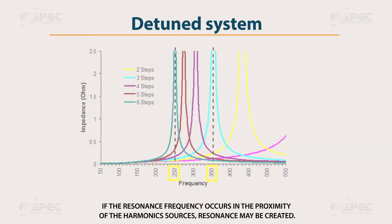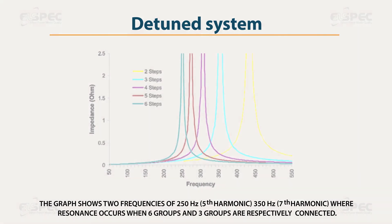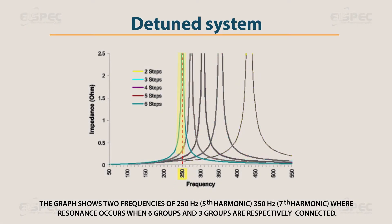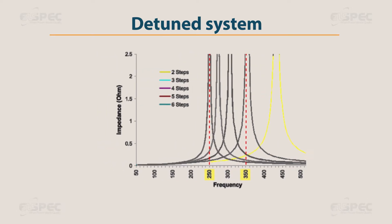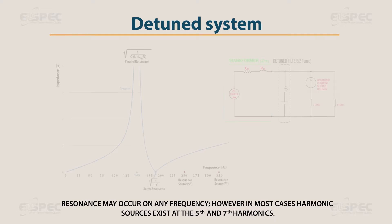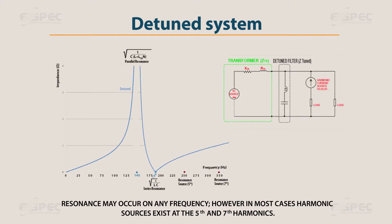If the resonance frequency occurs in proximity of the harmonic sources, resonance may be created. The graph shows two frequencies — 250 Hz (5th harmonic) and 350 Hz (7th harmonic) — where resonance occurs when 6 groups and 3 groups are respectively connected. Resonance may occur at any frequency; however, in most cases, harmonic sources exist at the 5th and 7th harmonics.